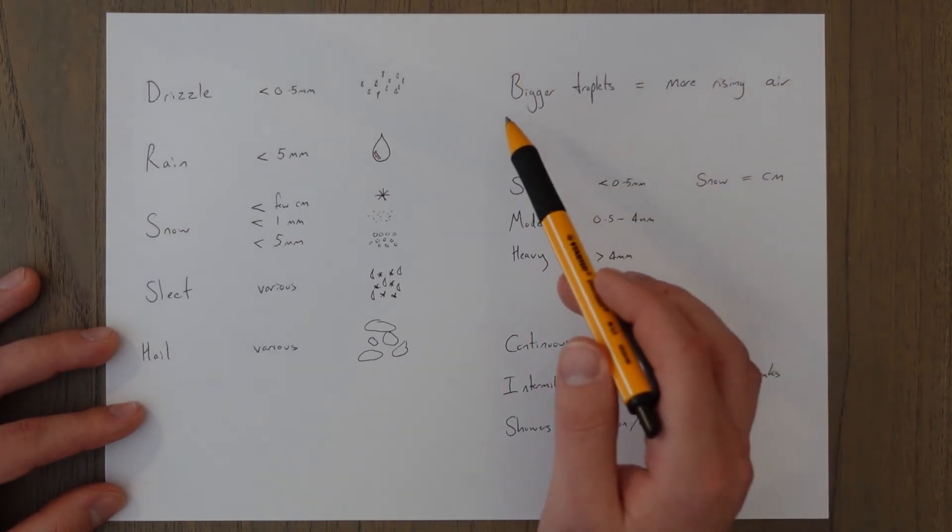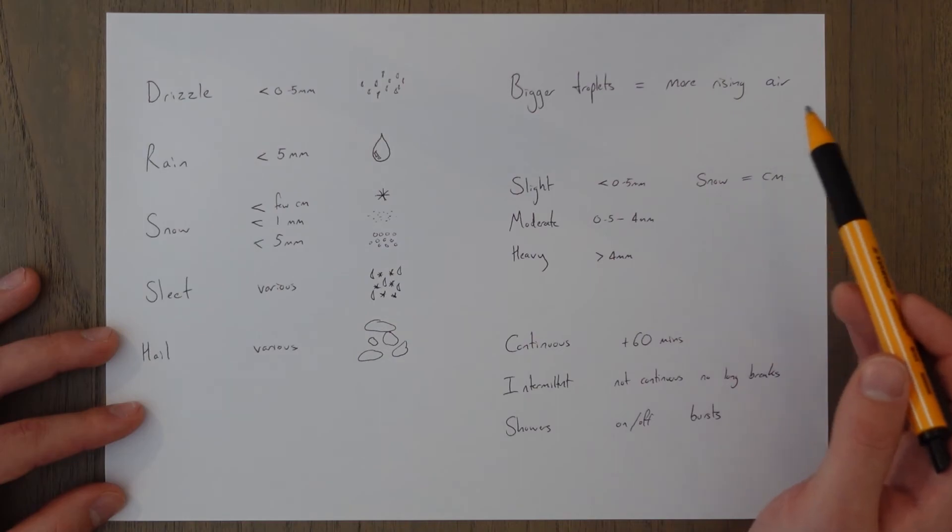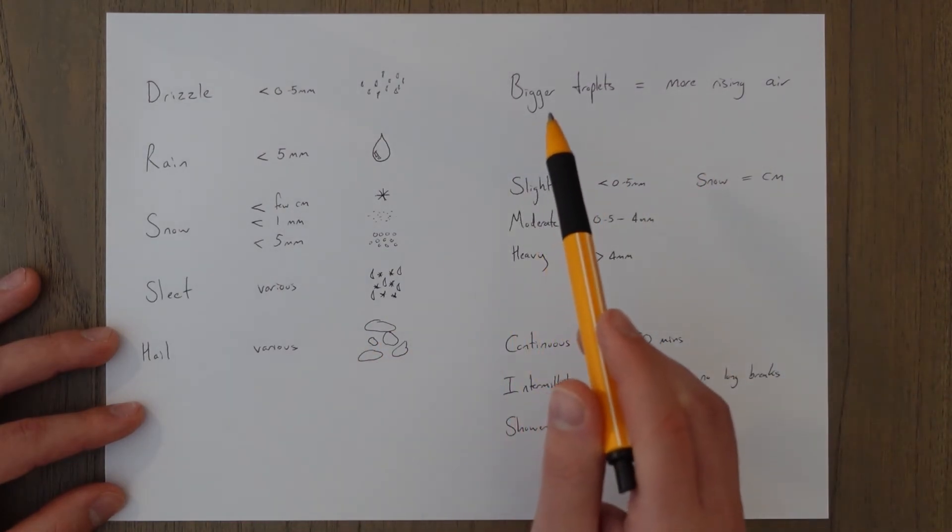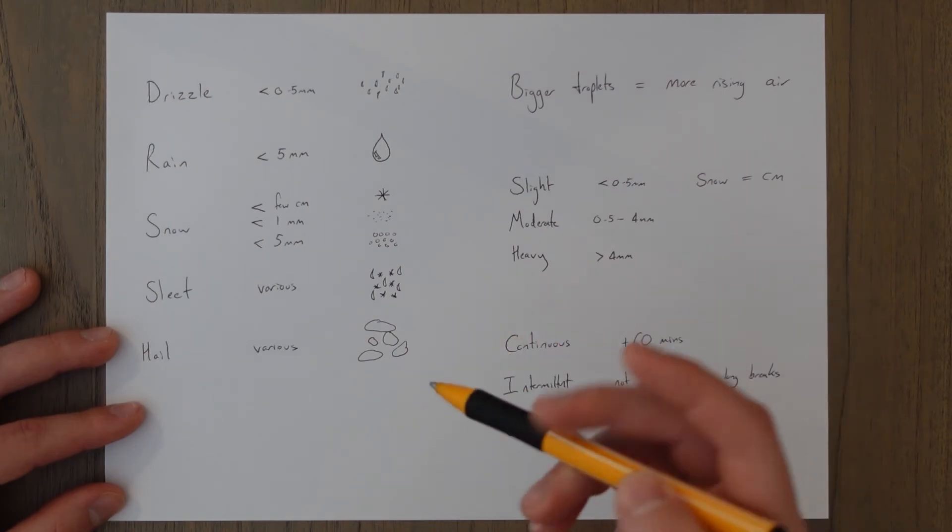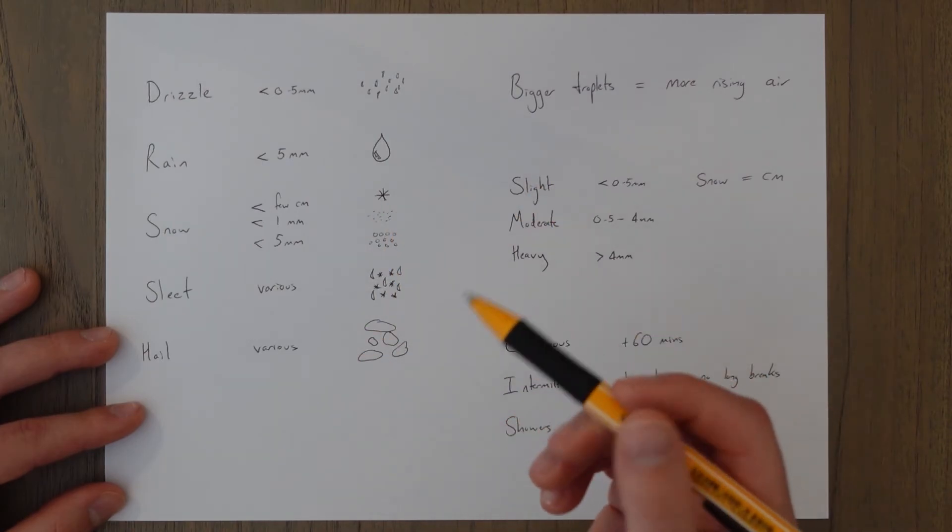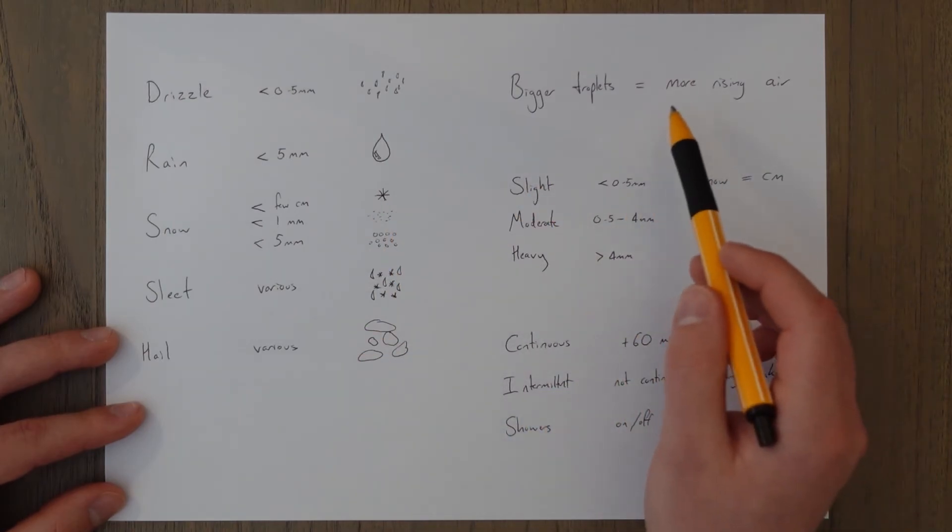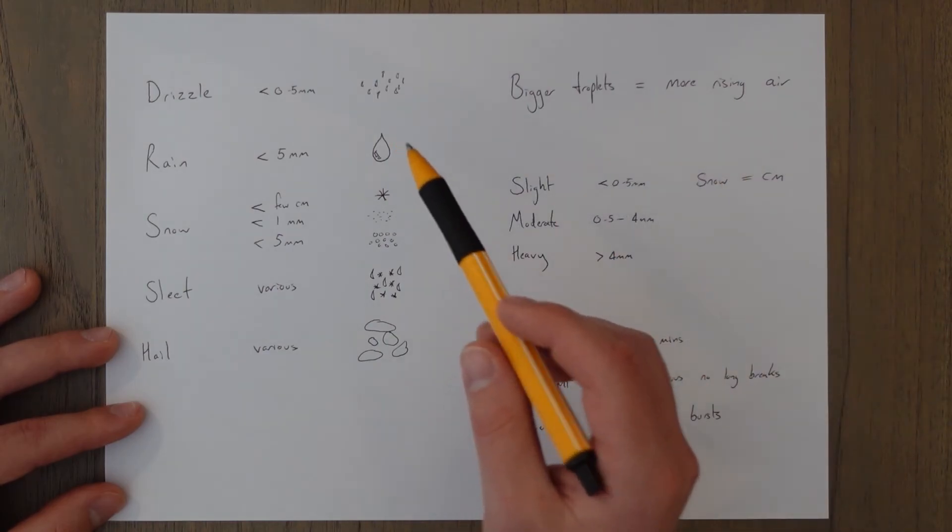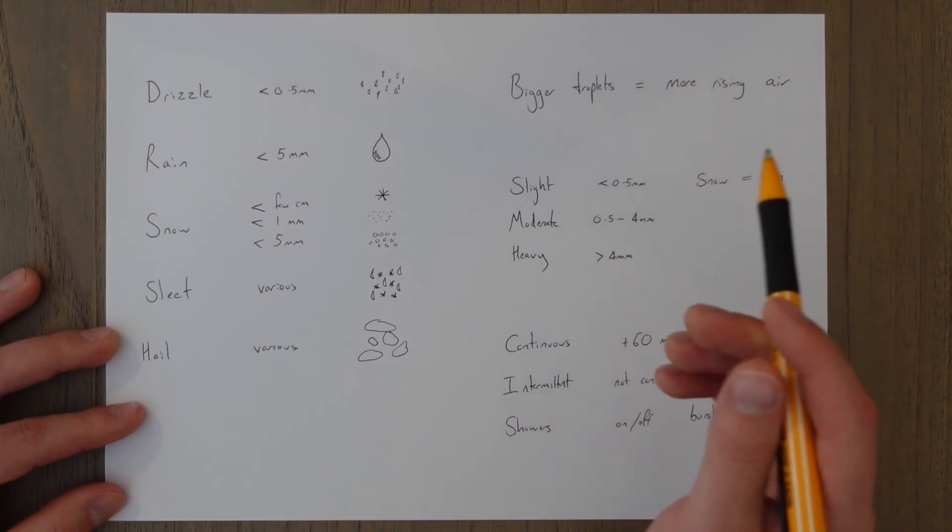And a rule of thumb is the bigger the droplets the more rising air you have. So think about hail getting all the way up to that tennis ball size. That's gonna be a huge droplet, or not really a droplet because a droplet is just of water. But that has a really high amount of rising air. And then drizzle not that much rising air, very small droplets.